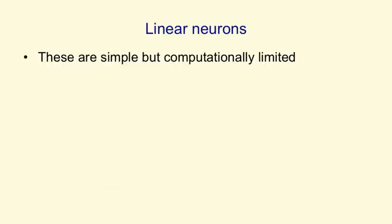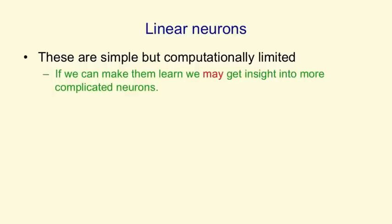The first kind of neuron I want to tell you about is the simplest. It's a linear neuron. It's simple. It's computationally limited in what it can do. It may allow us to get insights into more complicated neurons, but it may be somewhat misleading.